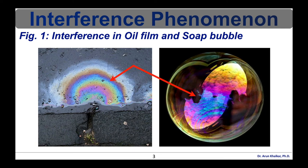When the thickness of the film is an odd multiple of one quarter wavelength of the light, the reflected waves from both surfaces interfere and cancel each other. Since the wave cannot be reflected, it is completely transmitted instead. When the thickness is a multiple of a half wavelength of the light, the two reflected waves reinforce each other, increasing the reflection and reducing the transmission.